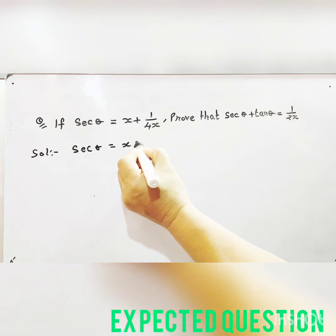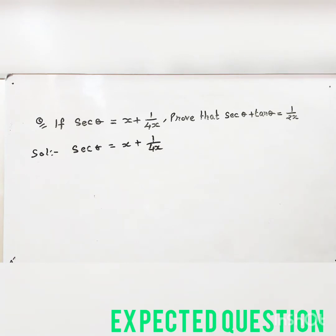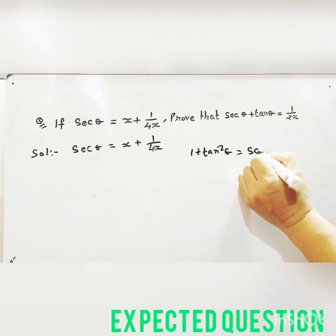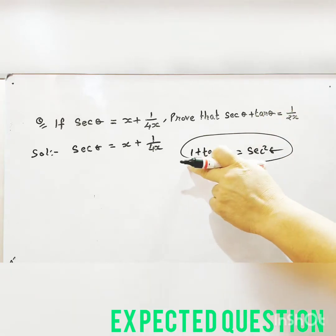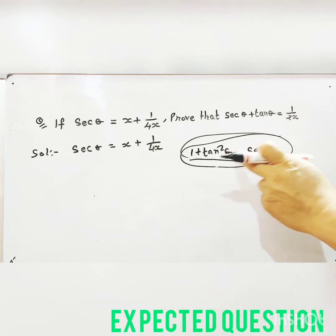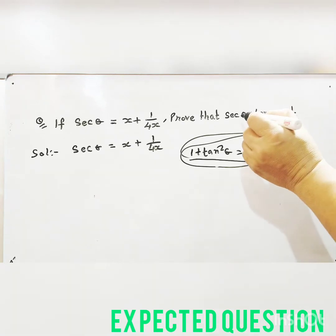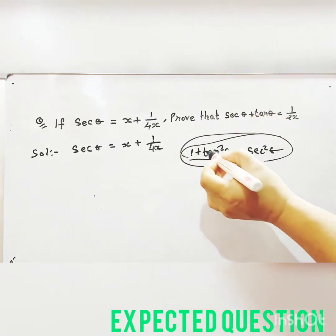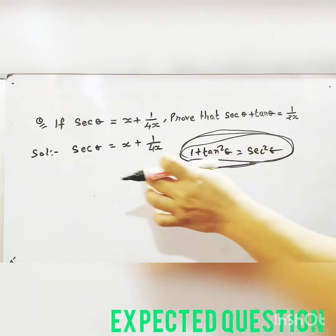Sec theta is equal to x plus 1 by 4x. Now, 1 plus tan square theta — what is that? That is sec square theta. We have to use this combination of this identity because it gives us both tan theta and sec theta.